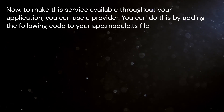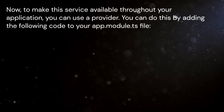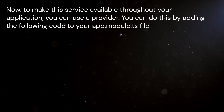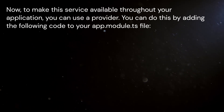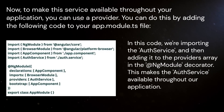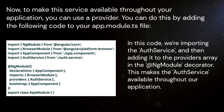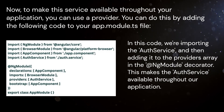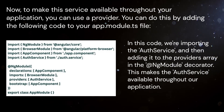Now, to make this service available throughout your application, you can use a provider. You can do this by adding the following code to your app.module.ts file. We are importing the auth service and then adding it to the providers array in the NgModule decorator. This makes the auth service available throughout our application.